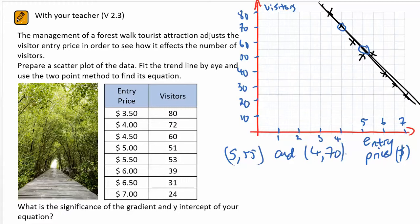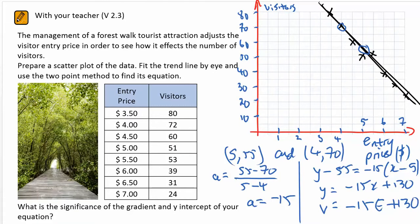I'll quickly work that through and give you the equation. Taking the two points (5, 55) and (4, 70), the gradient is negative 15, and the equation I can find in the gradient-point form: y minus 55 equals negative 15 lots of x take 5.